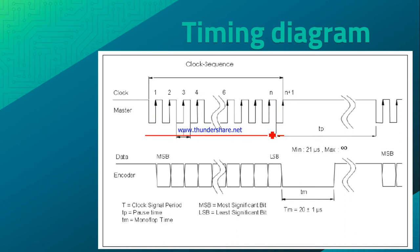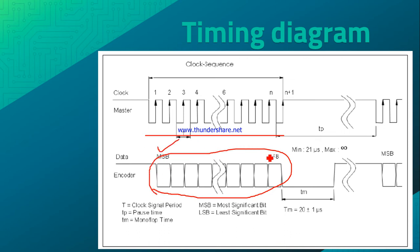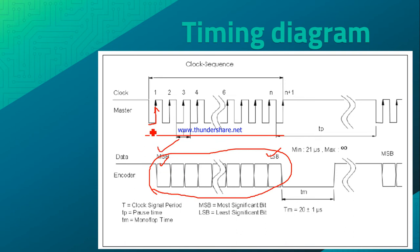Once the clock pulse is generated from the microcontroller and given to the clock pin of the encoder, it will start to transmit the position data. This is the MSB and this is the LSB. Initially the clock should be high, then it goes low. When the first rising edge occurs, the output register of the encoder starts to transmit the MSB.